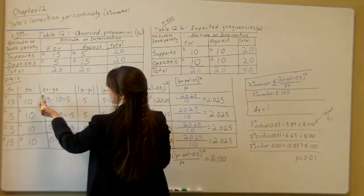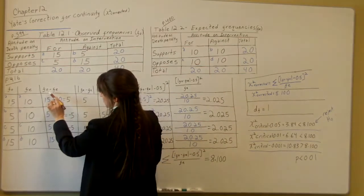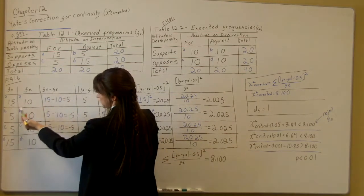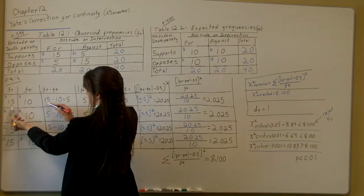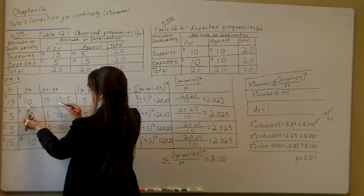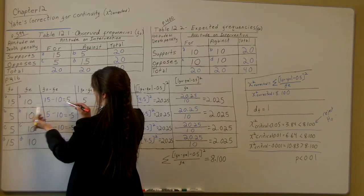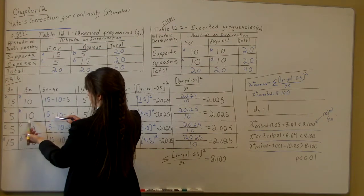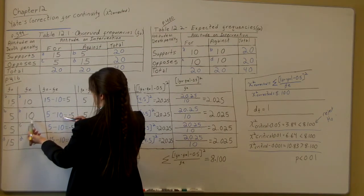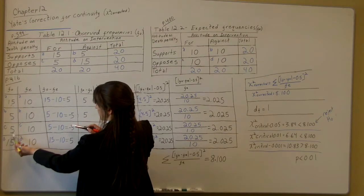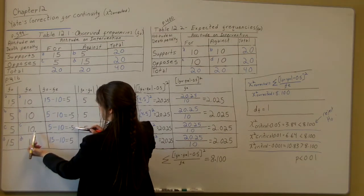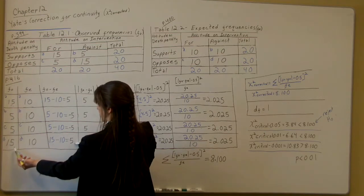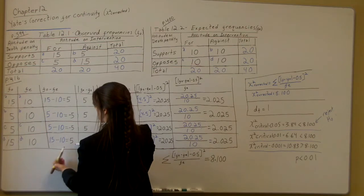The next column is the observed frequencies minus the expected frequencies. Look across each row: the observed frequency 15 minus expected frequency 10 equals 5. Working down, observed 5 minus expected 10 equals negative 5. Next, observed 5 minus expected 10 equals negative 5. And the last one: observed frequency 15 minus expected frequency 10 equals 5.